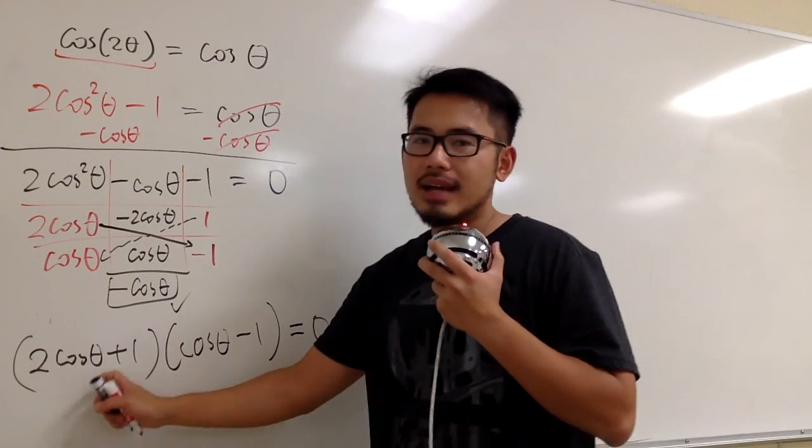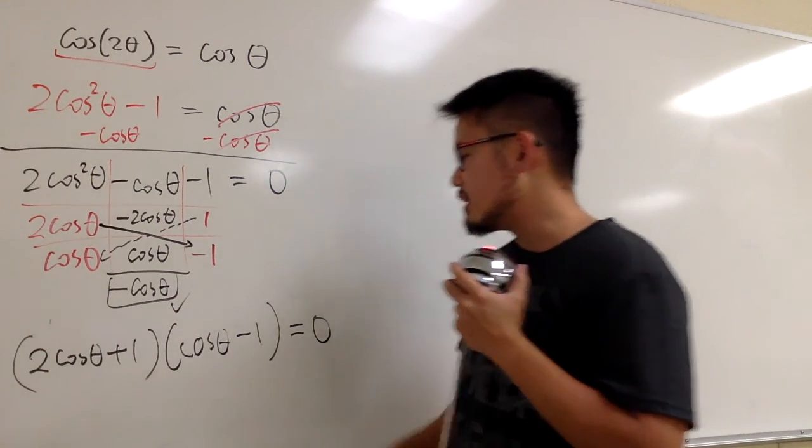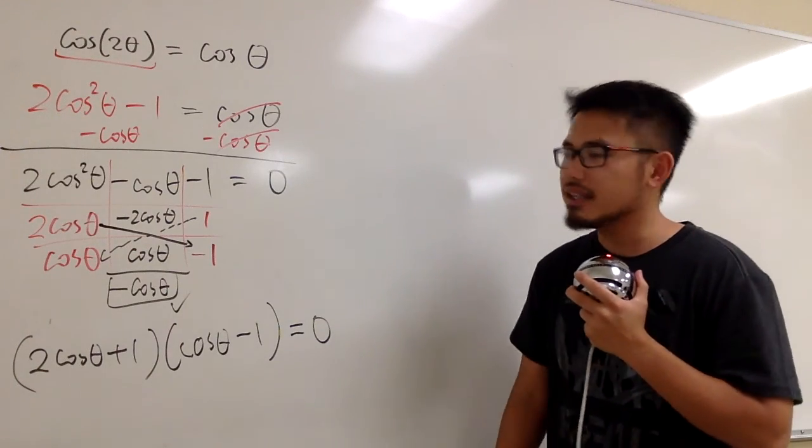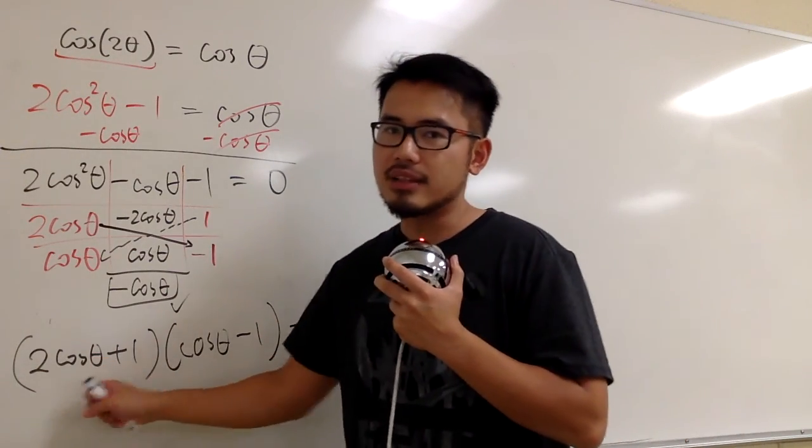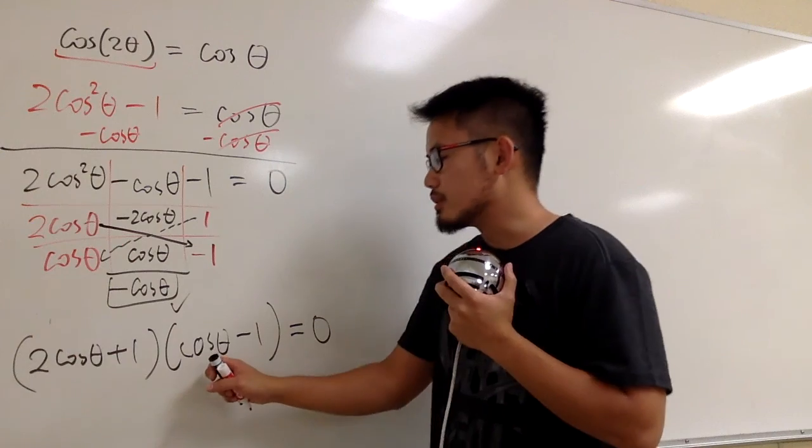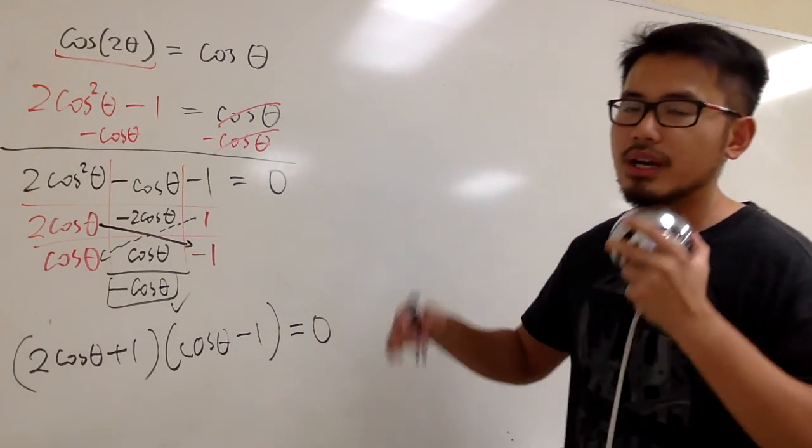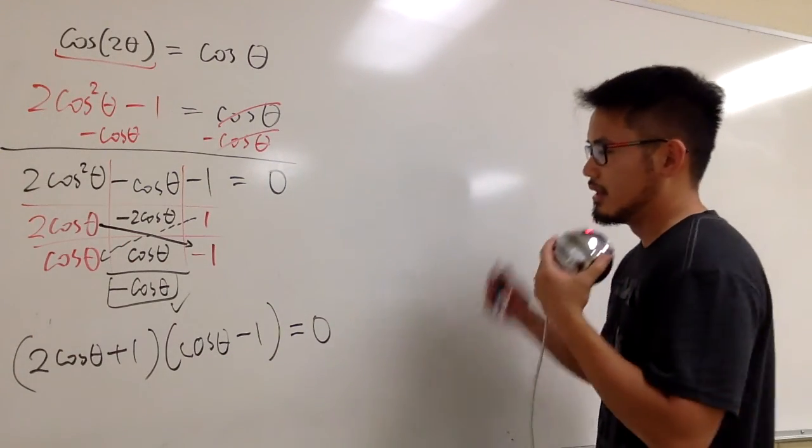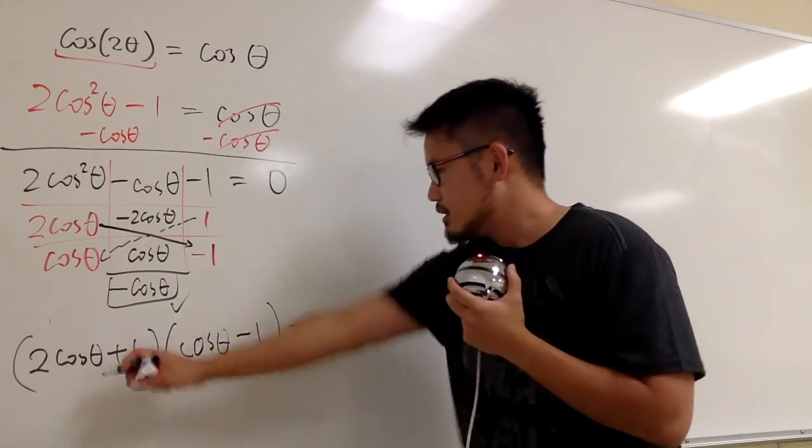And now, what? Well, you see that we have this factor times this factor. It's equal to 0 on the right-hand side. So that means I have to set this factor to be 0. And then, we also set this factor to be 0. And then, we solve them individually, and everybody will be happy.